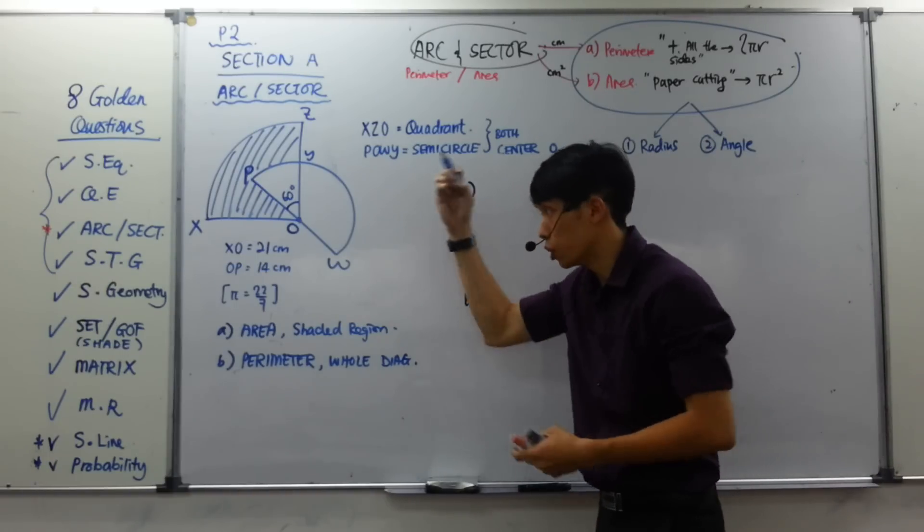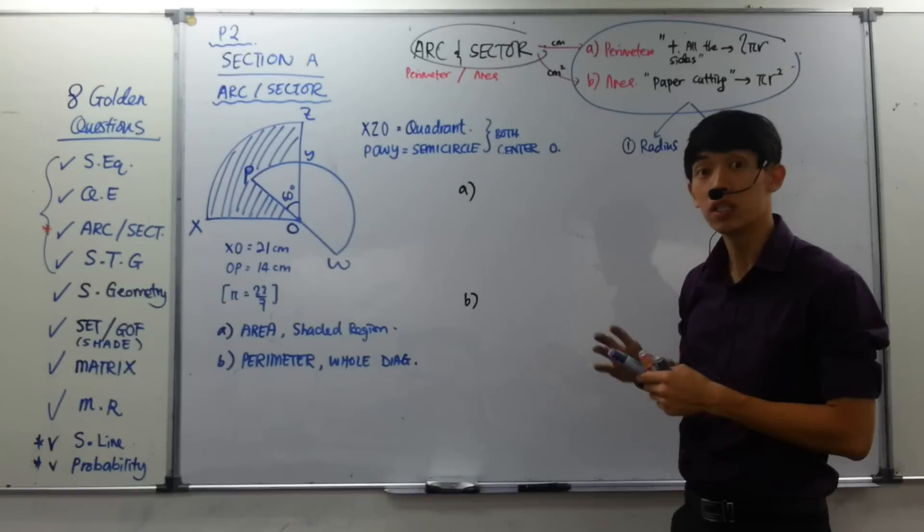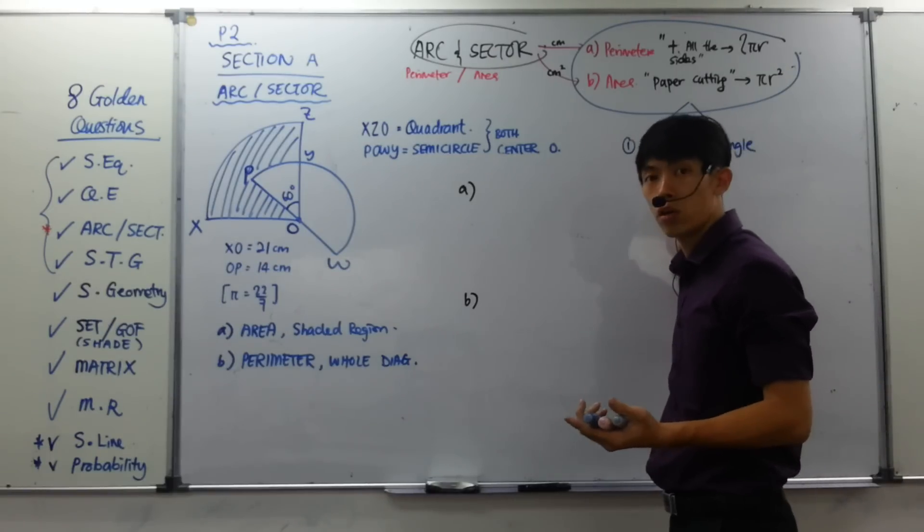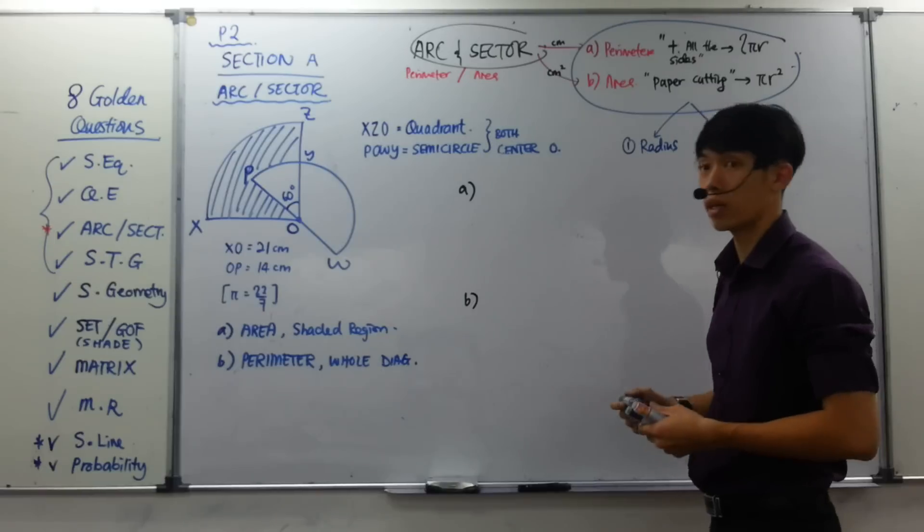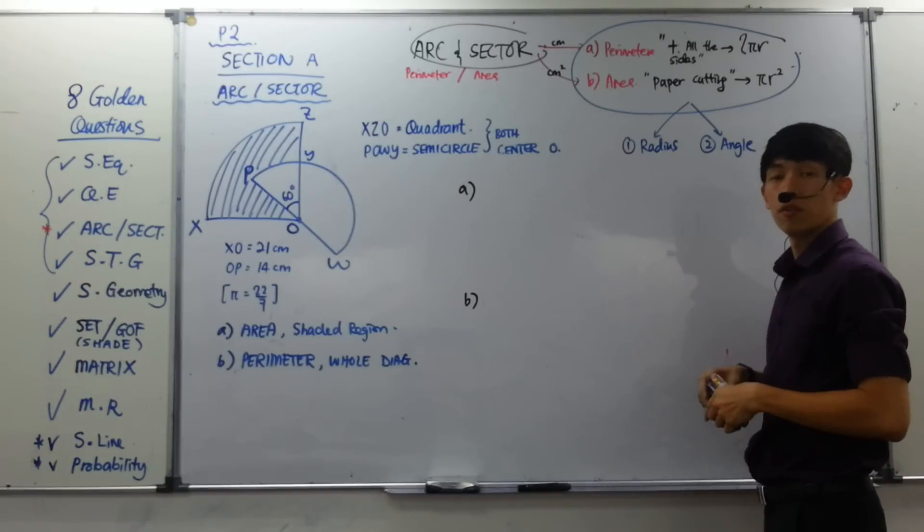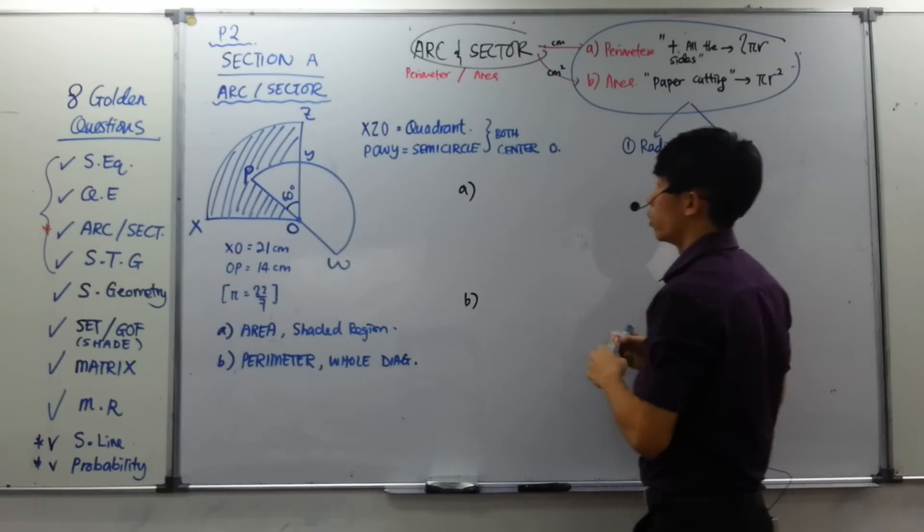And I draw two arrows. And these are the two information that you need to solve this question. First information, please remember, you have to detach this thing called radius. And the second one, you need this thing called angle. Just two information. So let's come to this question. And we detach all the information and fill in the blanks. This question is considered fill in the blanks.